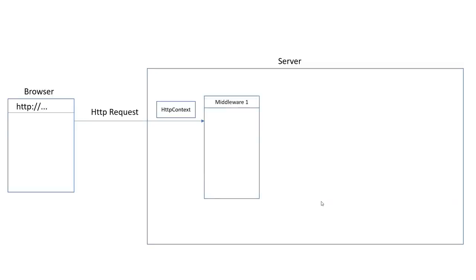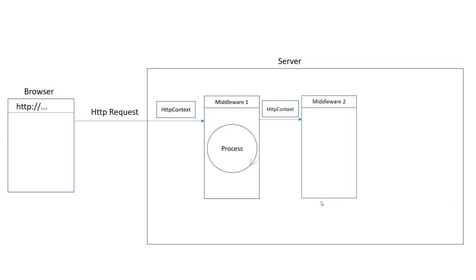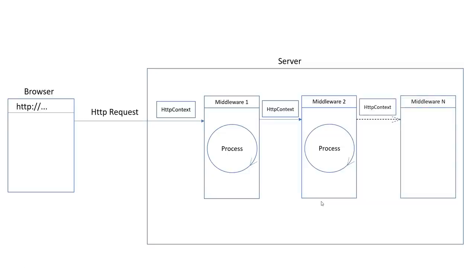In ASP.NET Core, once the request is routed to the web server, the HTTP request is encapsulated in the HTTP context object. After that, the context object is passed through one middleware after another. Each middleware takes different responsibilities in processing the request — some handle static resources, some generate dynamic content, some handle logging, and others handle error handling. Middleware should be made according to the single responsibility principle. When processing the request, middleware may write to the HTTP context object to generate the final HTTP response. Since all middleware is linked together, we call this the middleware pipeline.